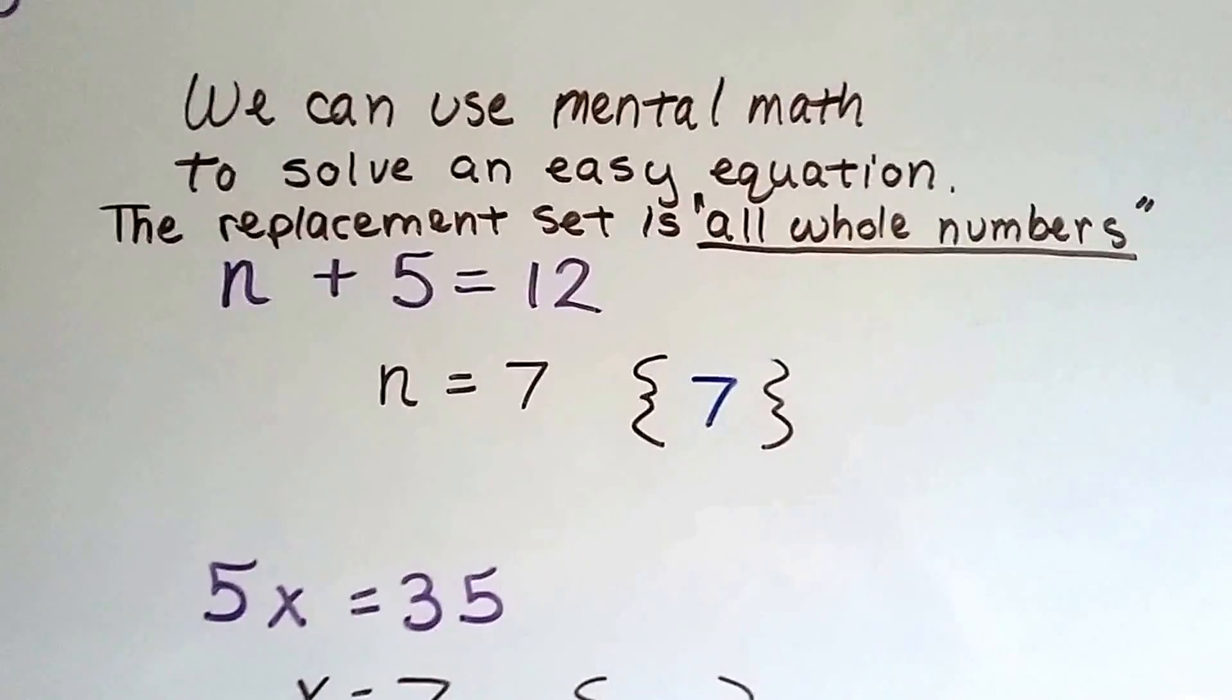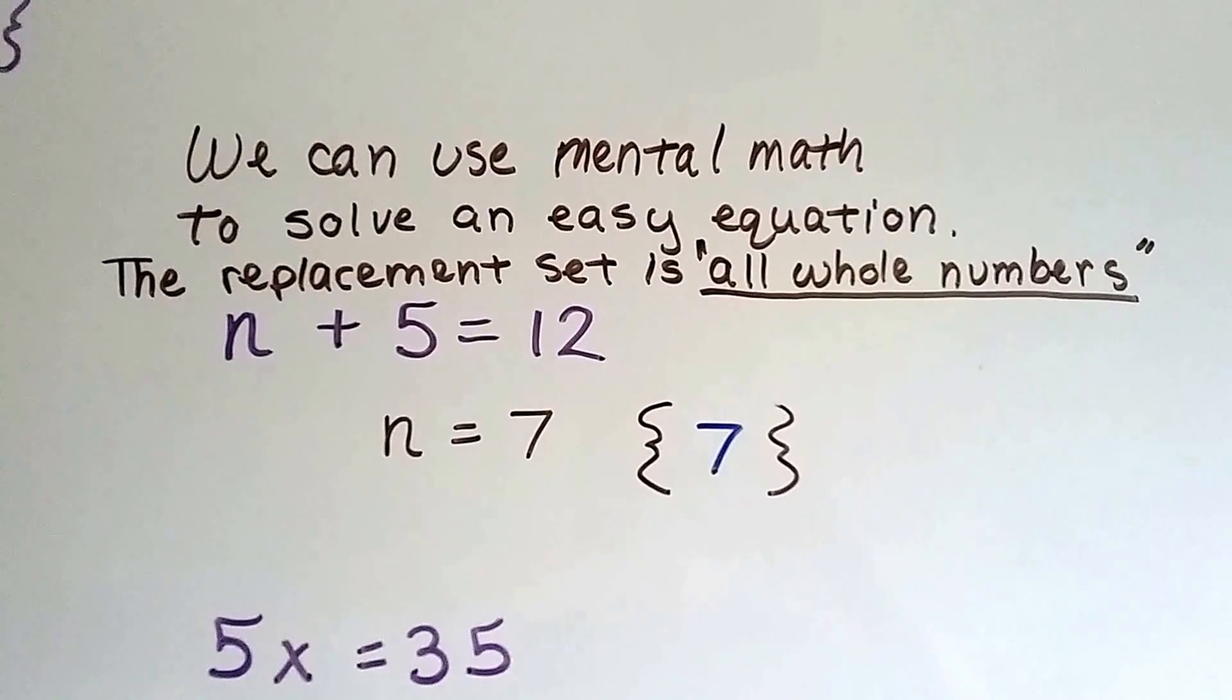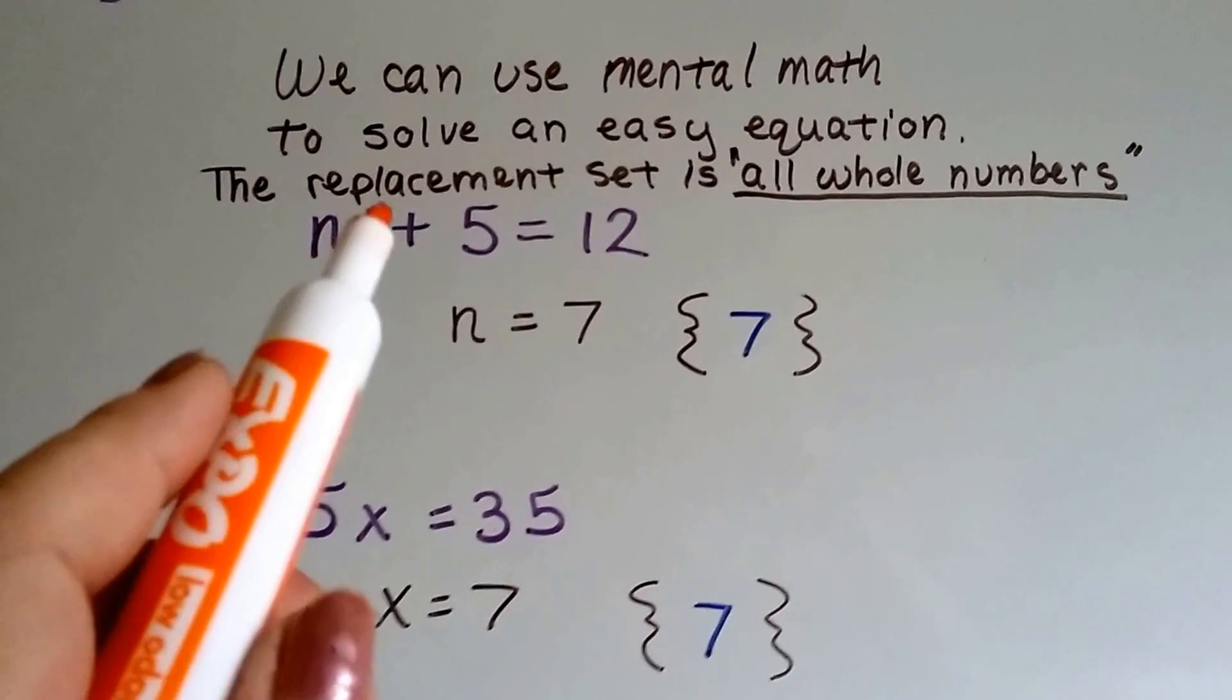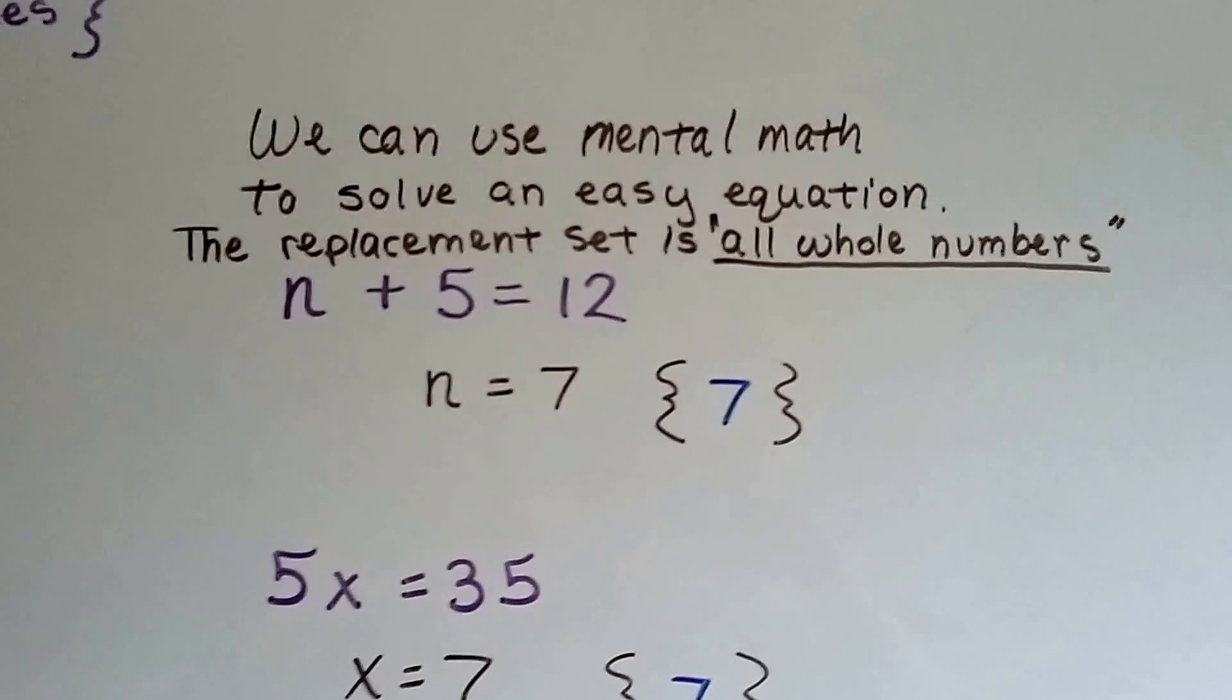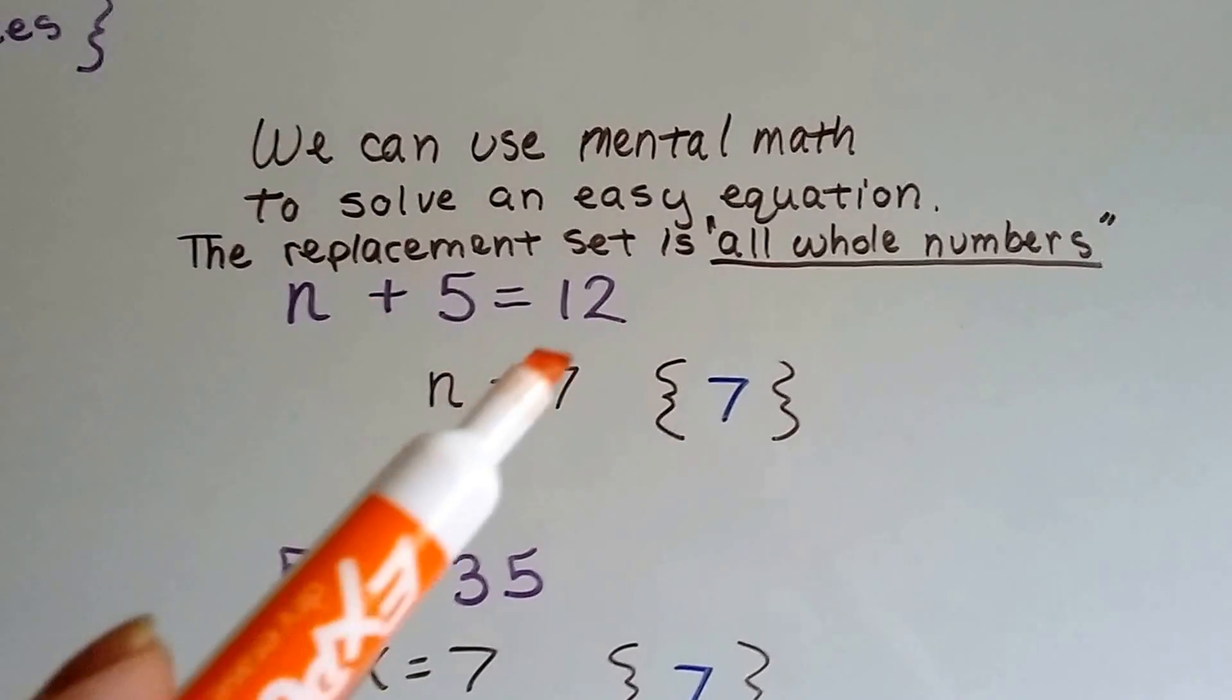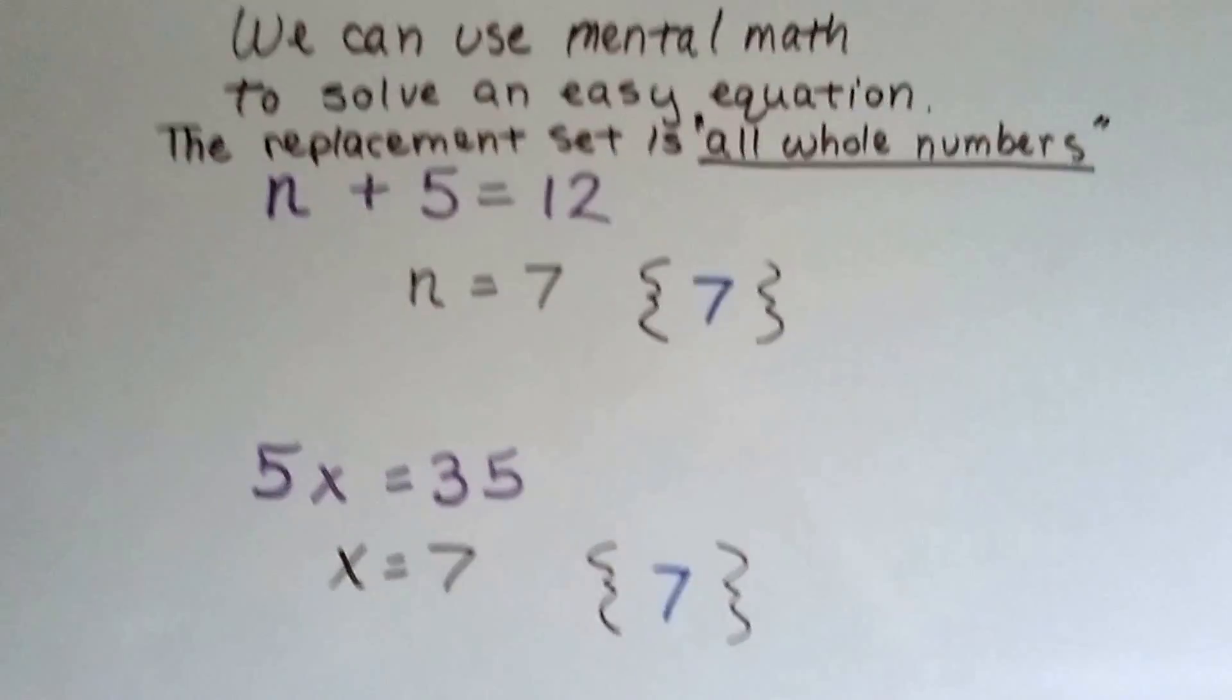We can use mental math to solve an easy equation. If the replacement set was all whole numbers, so that means our replacement set isn't just a few numbers in braces. It's all whole numbers. So if n plus 5 equals 12, well, what plus 5 equals 12? 7. So n equals 7. We could also do the opposite, the inverse operation. 12 take away 5 equals 7, right? Because they're fact families.